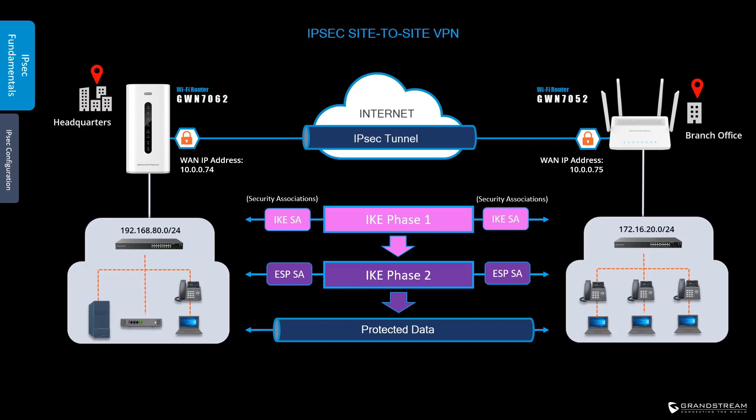To establish an IPsec tunnel, the devices use a protocol called Internet Key Exchange to negotiate the security protocols that will be used for the IPsec tunnel. This process involves two phases. In Phase 1, the two routers authenticate each other and negotiate the protocols to use for encryption, authentication, and hashing. Phase 1 creates a secure tunnel for management traffic, which Phase 2 then uses to negotiate the security associations that will protect data traffic.